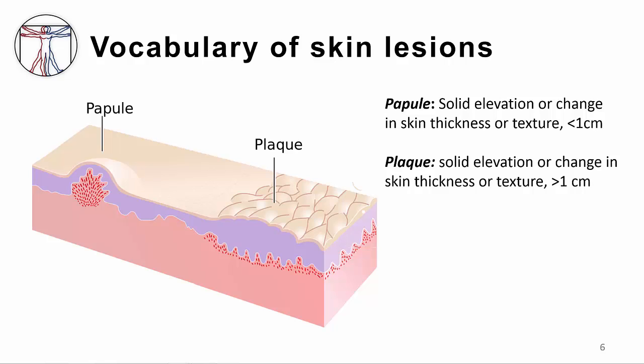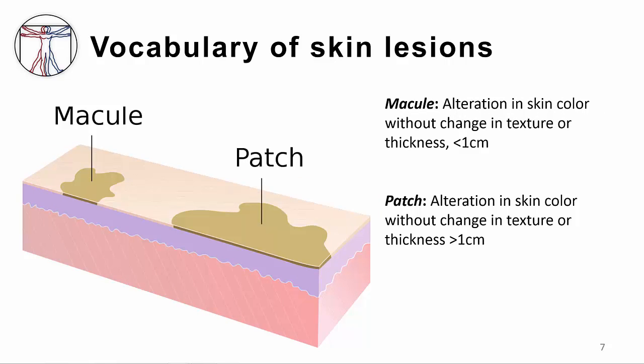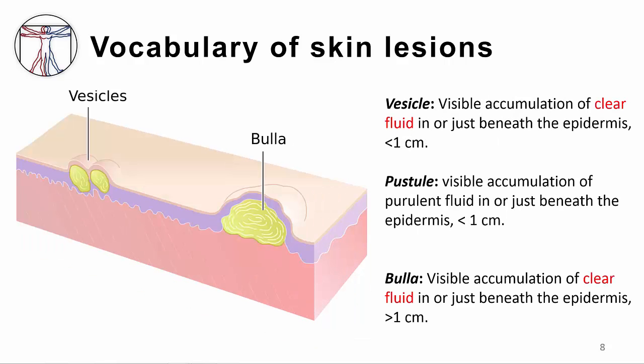A papule, as shown here, is a solid raised rash that's less than a centimeter in size. It can come in many different colors. A plaque is similar to a papule, but larger. In contrast, a macule is a change in skin color without change in the thickness or texture of the skin — you can't feel the rash if you touch the skin, and it's also less than a centimeter in diameter. A patch is just like a macule, except it's larger.